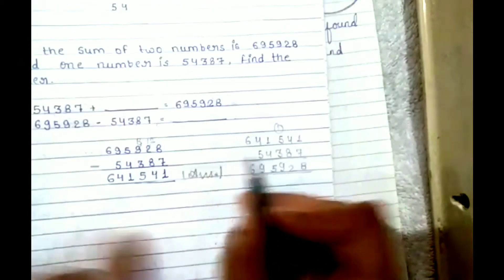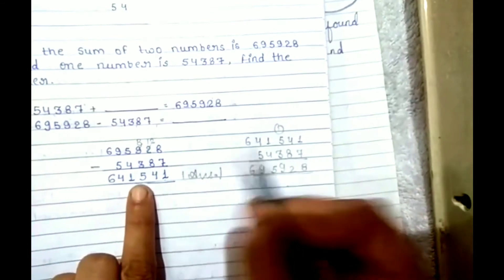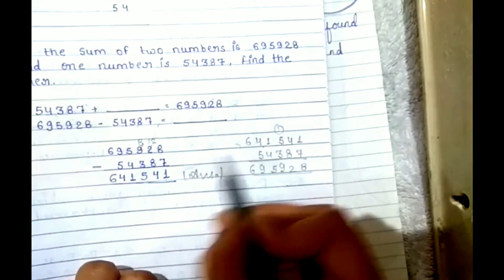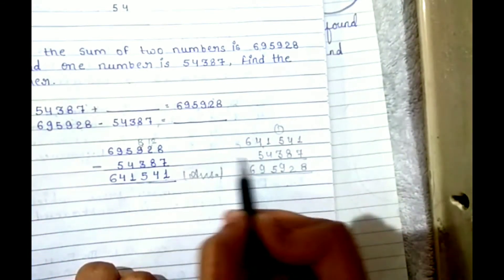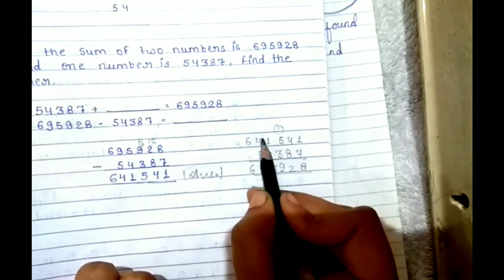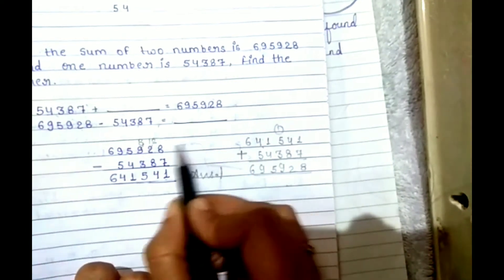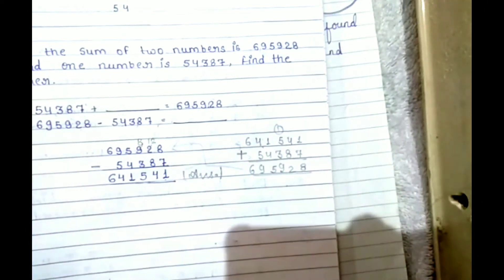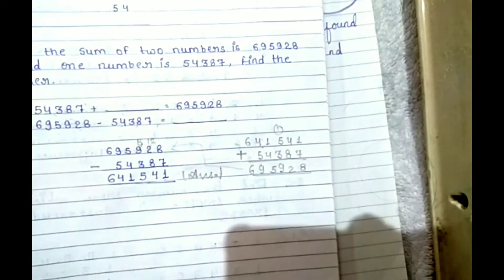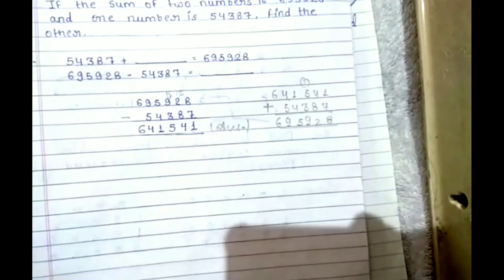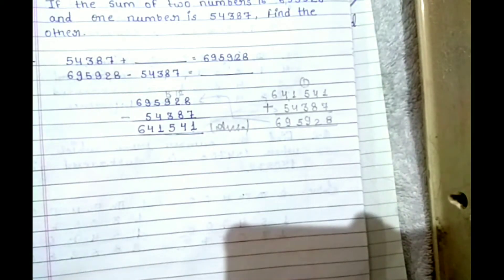देखो यहां पर हमने prove भी किया है। ये वाला number as it is यहां write किया, उसके बाद ये write कर दिया, और इन दोनों को plus करने पर आपका ये वाला number आ गया। आज आपको addend find करना आ गया।